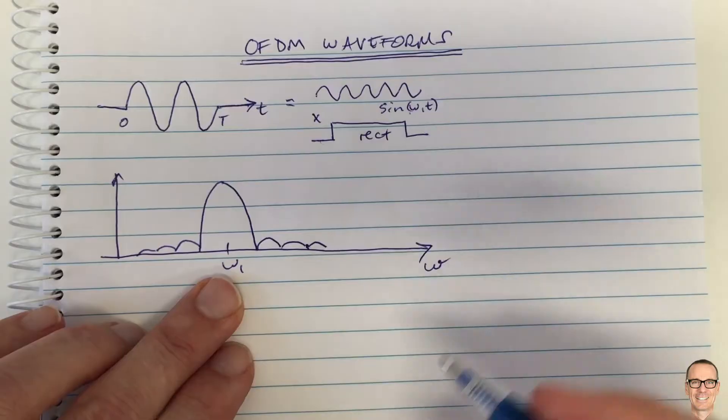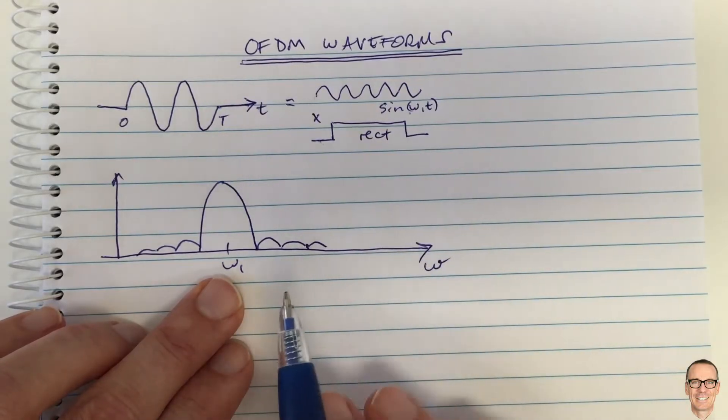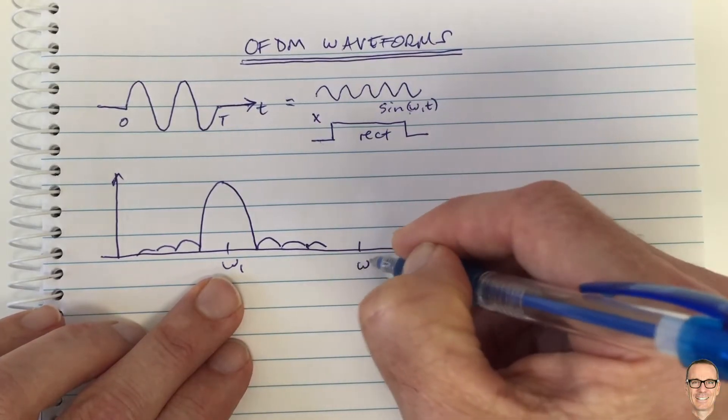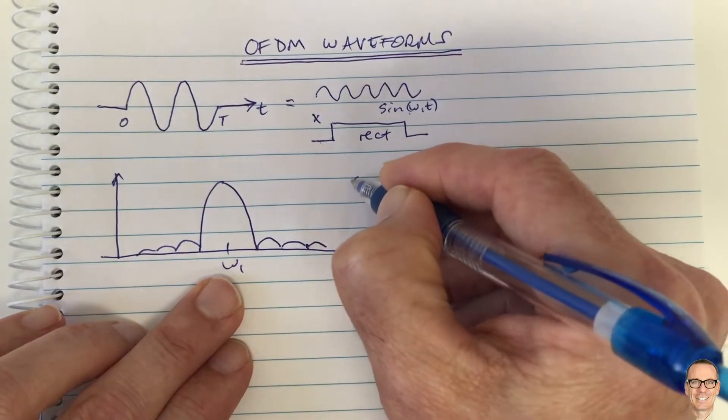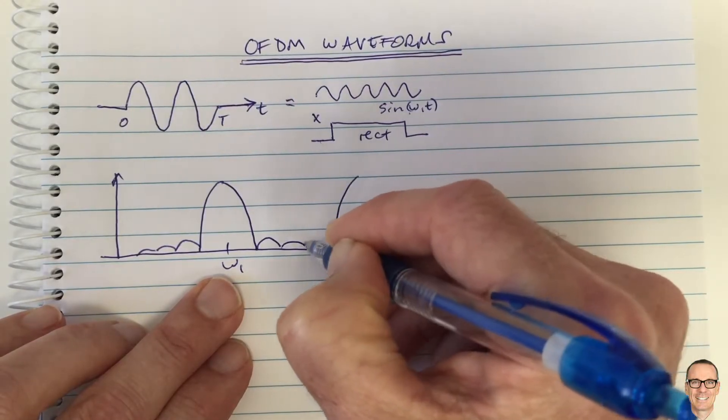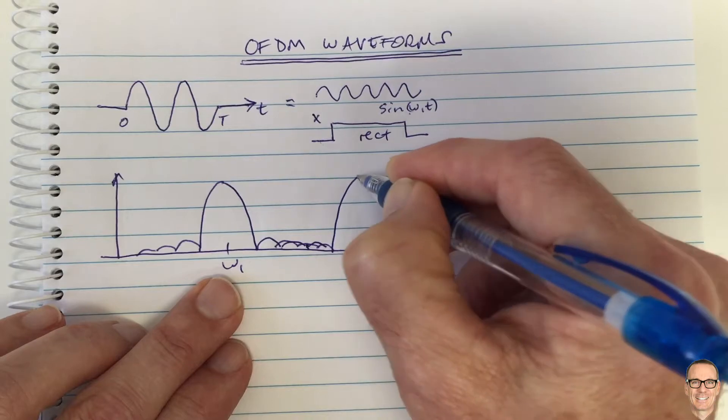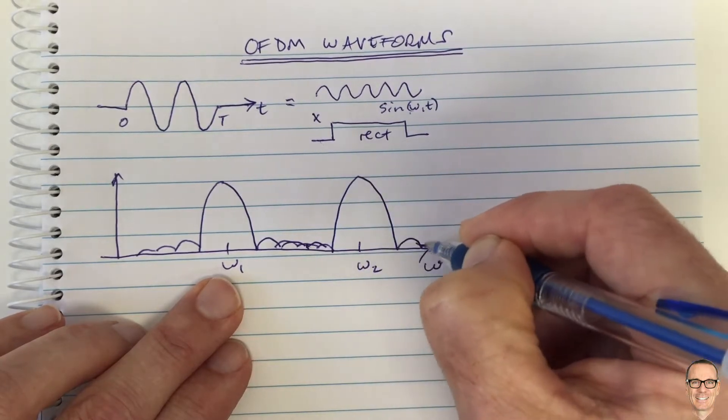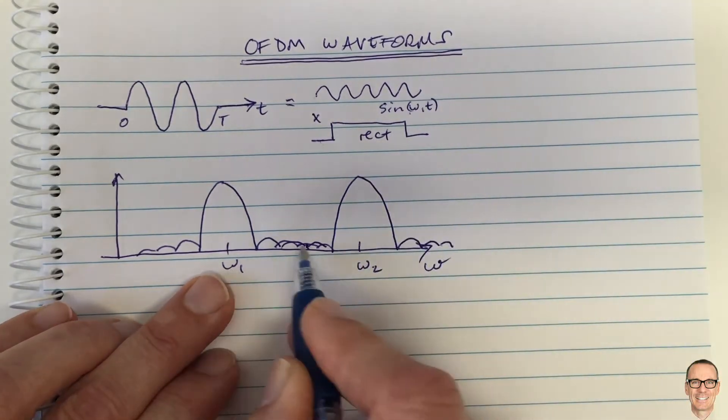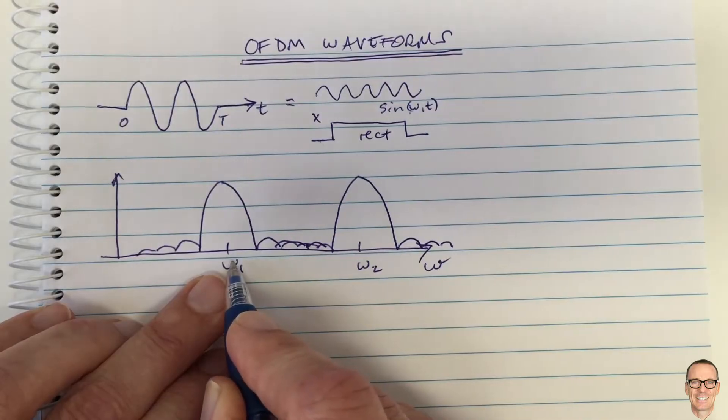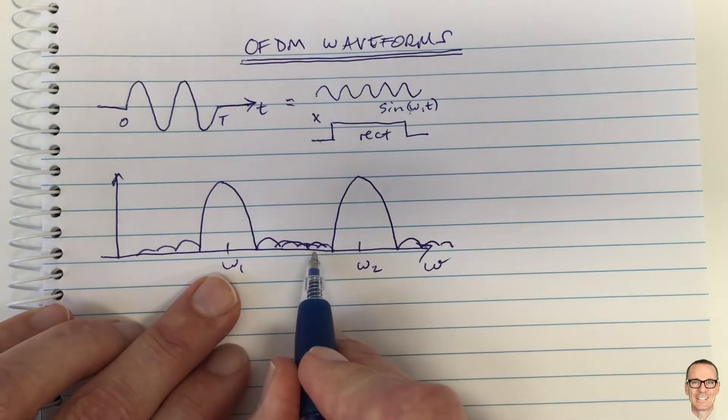So we could put another signal on the same channel by picking another carrier frequency, omega 2, and if we pick that far away from here then we would get most of the main lobe not interfering with these side lobes from our first carrier. But there would be some interference in here.